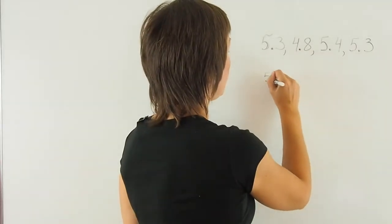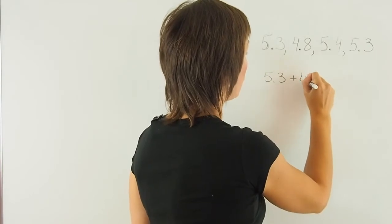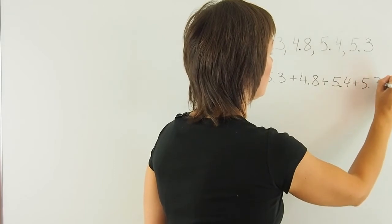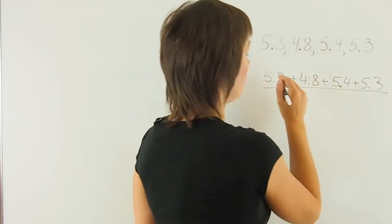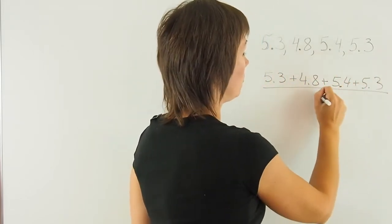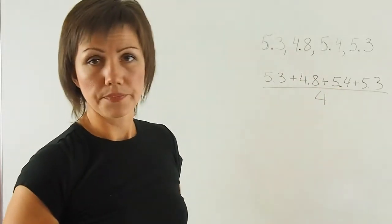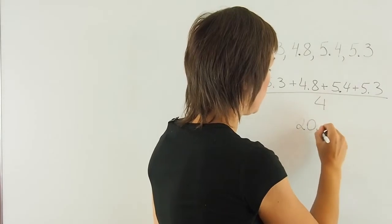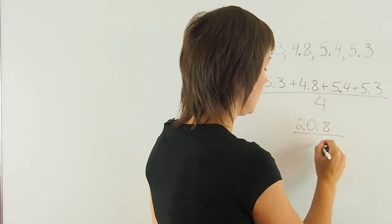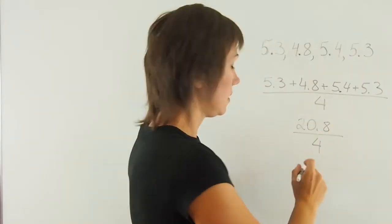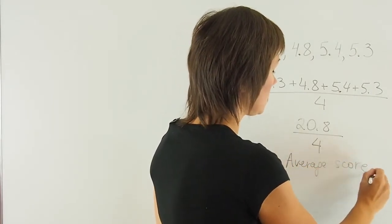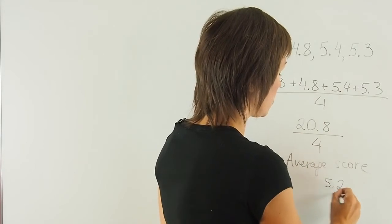So 5.3 plus 4.8 plus 5.4 plus 5.3, over 1, 2, 3, 4 - 4 numbers. At the top we'll get 20.8 and divide it by 4. The average score is 5.2.